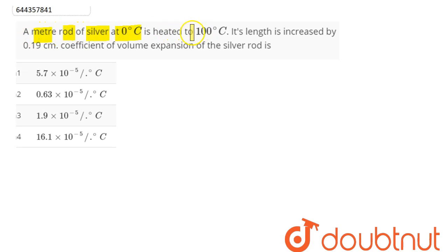silver at 0°C is heated to 100°C. Its length is increased by 0.19 centimeter. Coefficient of volume expansion of the silver rod is... So we need to find coefficient of volume expansion, that is gamma.